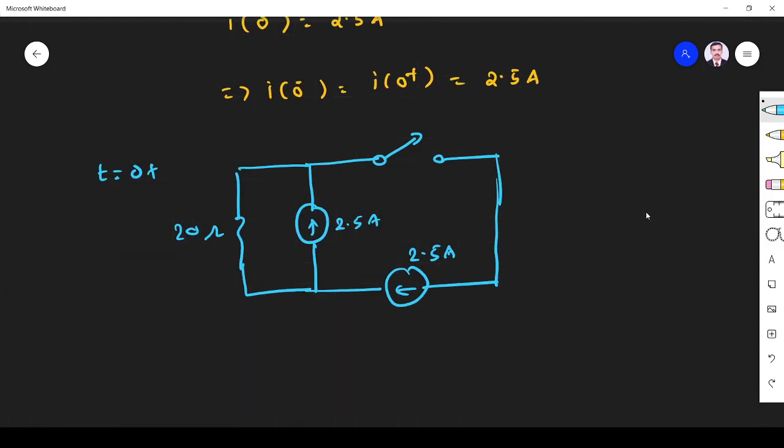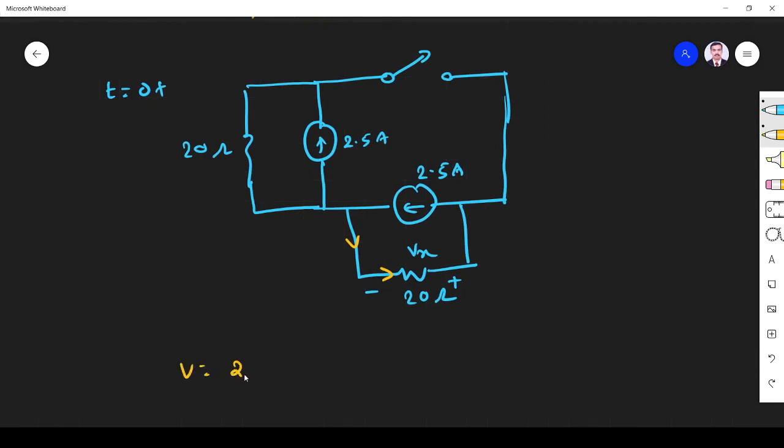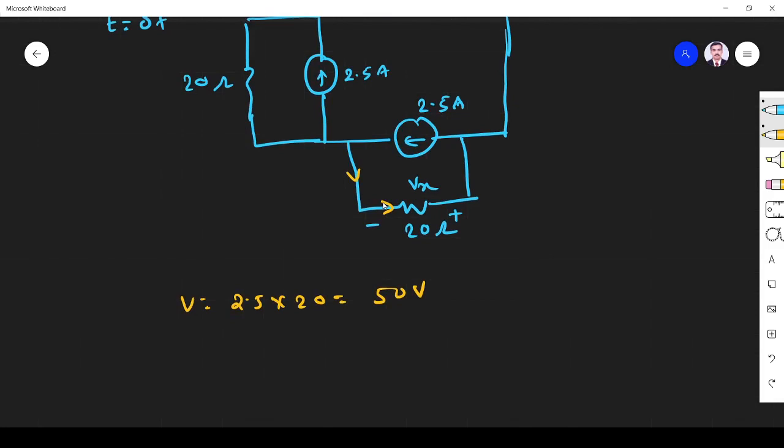So now this is the resistance, 20 ohm minus plus. So that's what they are given in the problem: Vx. So this Vx I have to find. So the current comes in this direction. So what is my V? V equals I into R. So it is 2.5 ampere into 20 ohm, that is 50 volt. But what they ask is Vx. It is going in this direction. So V must be like this plus minus. So Vx is opposite to V. So Vx equals minus 50 volt.